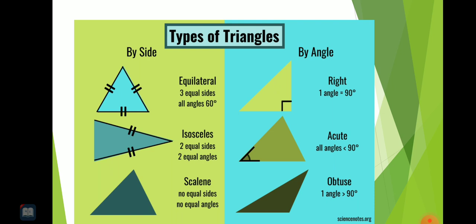So first one is equilateral triangle that has three sides equal and all angles are 60 degrees.